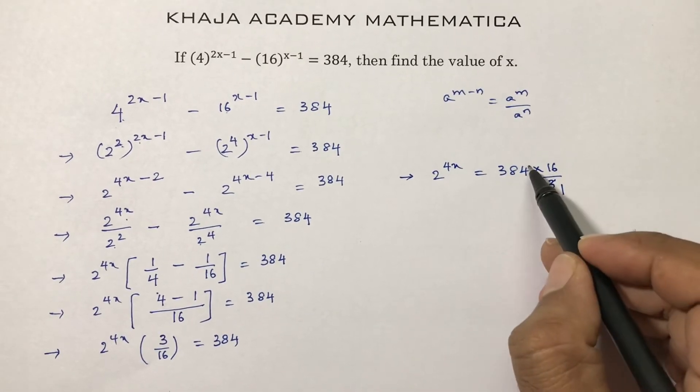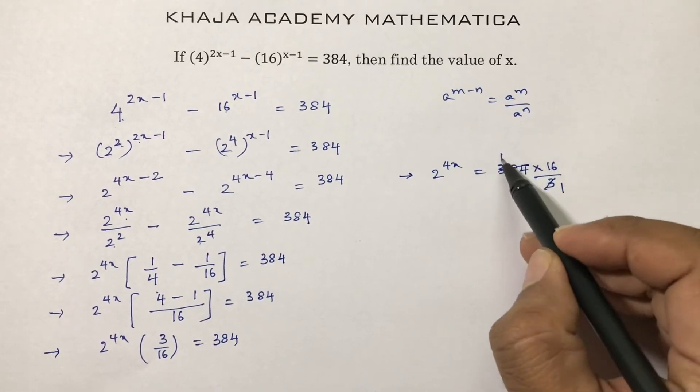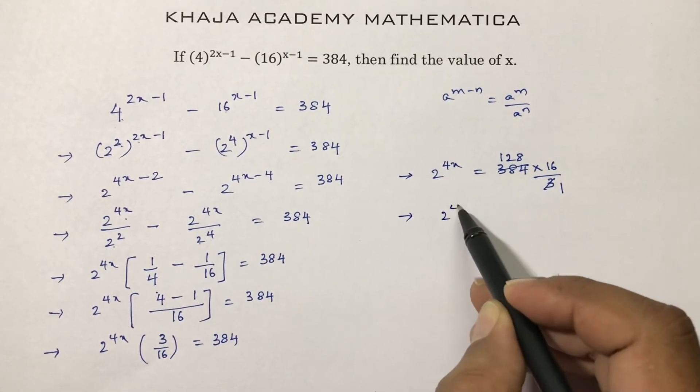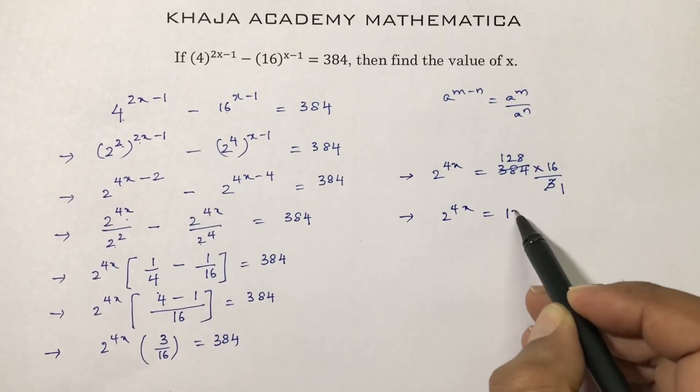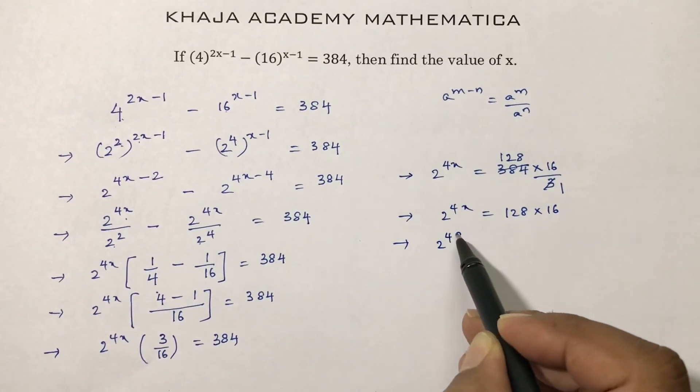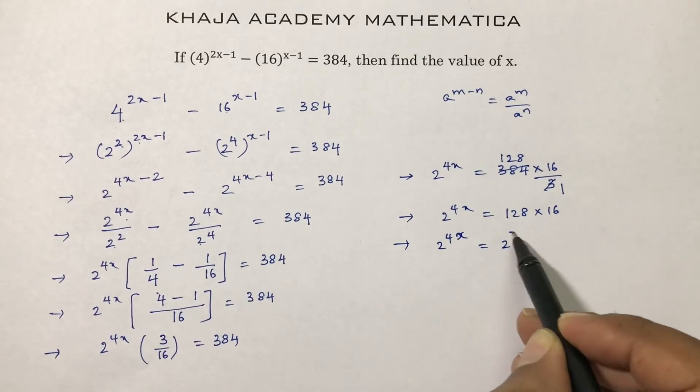So 3 times 128, 2 power 4x is 128 times 16. So if you do prime factorization for 128 you will get 2 power 7, and 16 is 2 power 4.